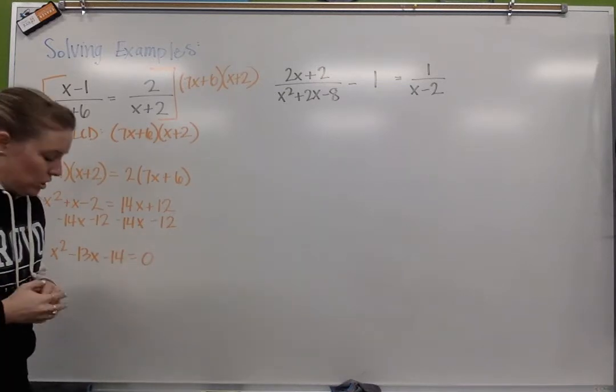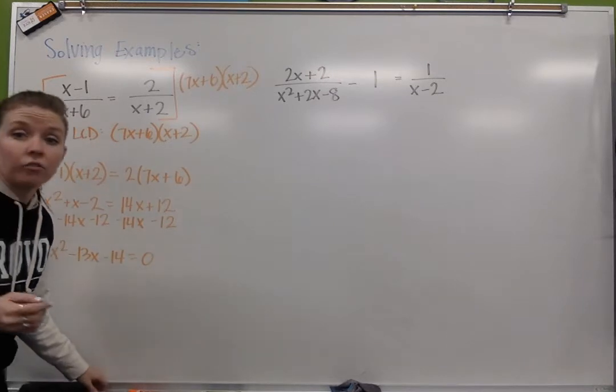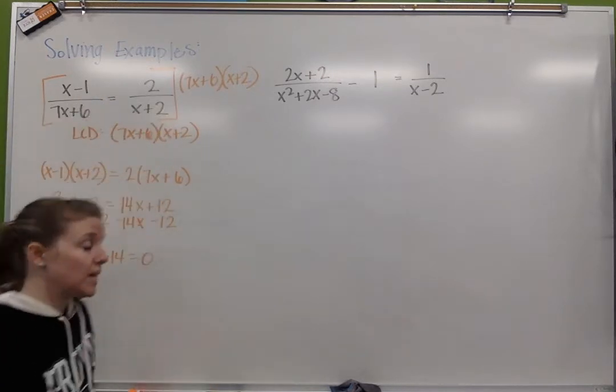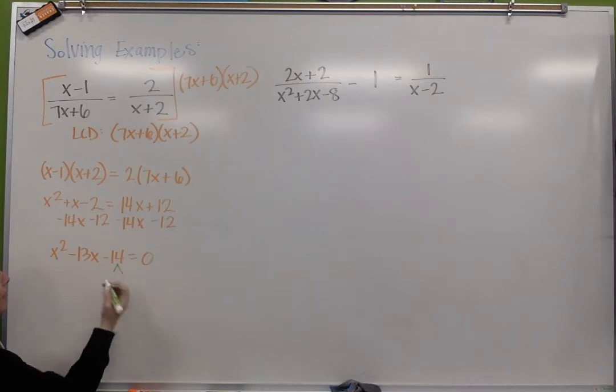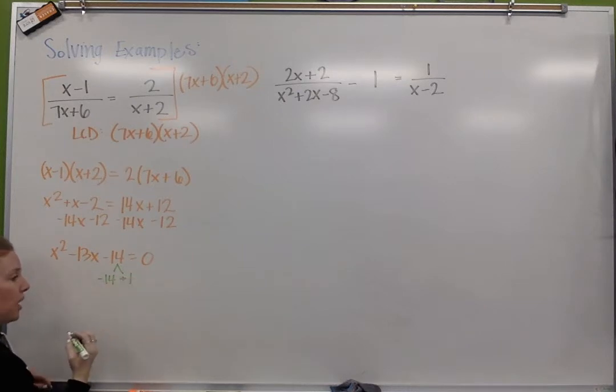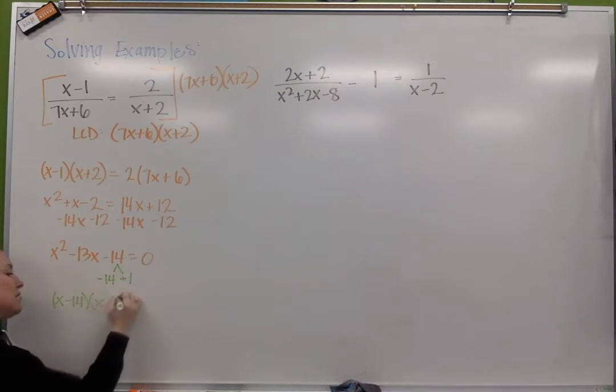So to solve a quadratic we're going to solve by factoring. So if we take a look at this, the factors of 14 that'll combine to be 13 is 14 and 1. It's a negative 13, so negative 14 and positive 1. So my factors are x minus 14 times x plus 1 equals 0.